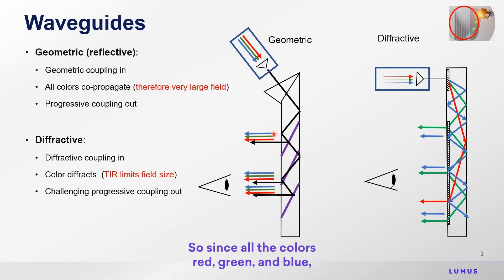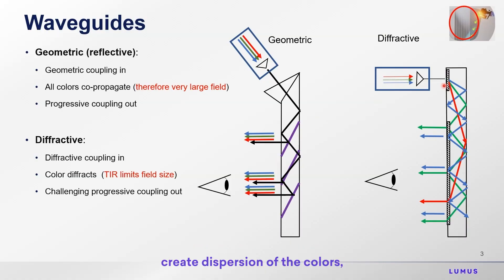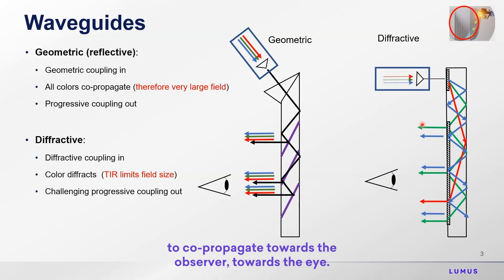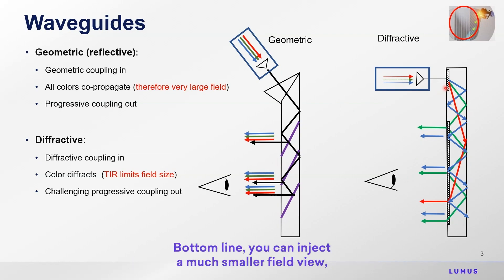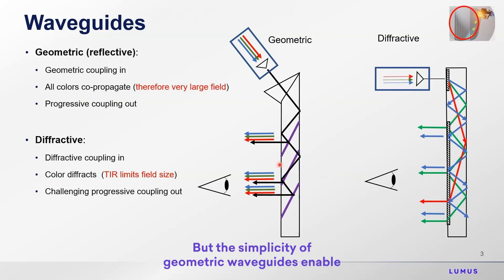Since all the colors — red, green, and blue — co-propagate in the waveguide, the waveguide can support a large field of view. Just for comparison, diffractive works differently. You have a diffractive or hologram or grating coupling in, creating dispersion of the colors, each one propagating at a different angle. When they couple out, the grating creates a negative dispersion that causes the beam to co-propagate towards the observer. The issue is that because the beams propagate at different angles, they consume much of the dynamic range of total internal reflection, so you can inject a much smaller field of view in a single waveguide. The simplicity of geometric waveguides enables a very large field of view.